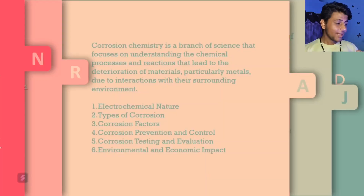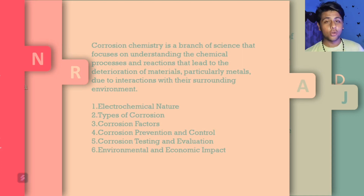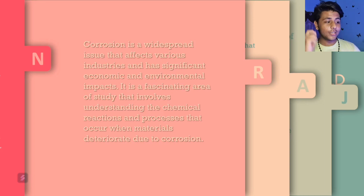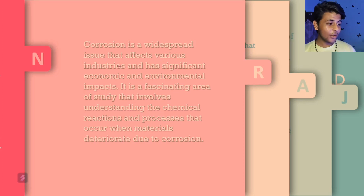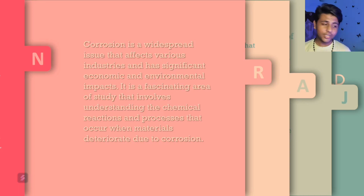The topics we are going to cover today include: electrochemical nature, types of corrosion, corrosion factors, corrosion prevention and control, corrosion testing and evaluation, and environmental and economic impacts. Corrosion is a widespread issue that affects various industries and has significant economic and environmental impacts. It is a fascinating area of study that involves understanding the chemical reactions and processes that occur when materials deteriorate.